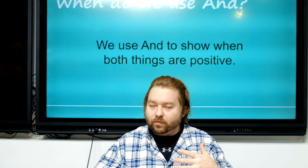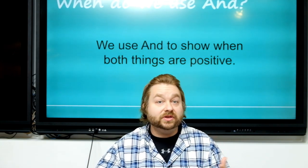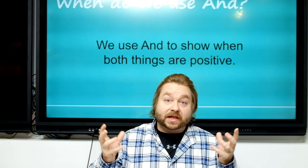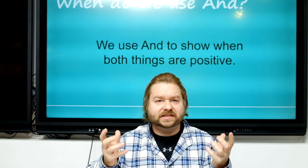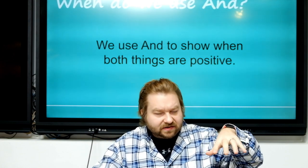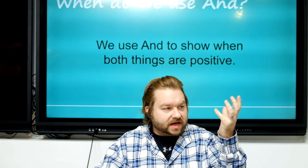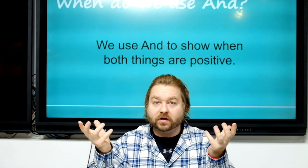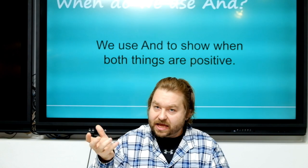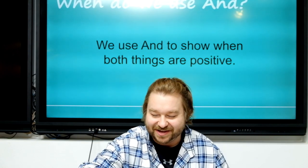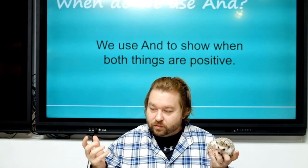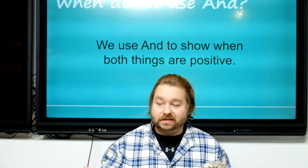Let's look at when to use 'and,' 'but,' and 'or.' When do we use 'and'? We use 'and' to show both things are positive — not positive as in good, but positive as in something exists. 'I have a hedgehog and a bird' — there are two things. We use 'and' to show that two things exist.